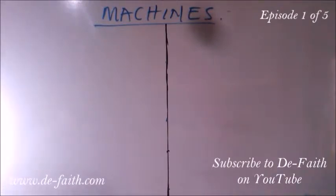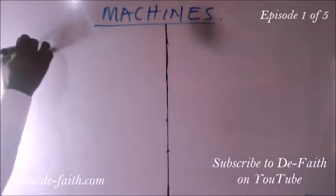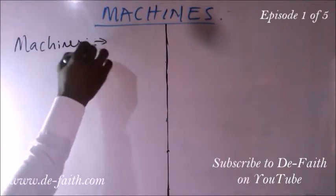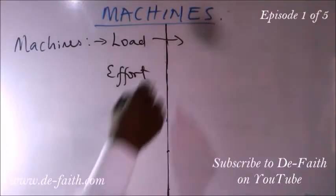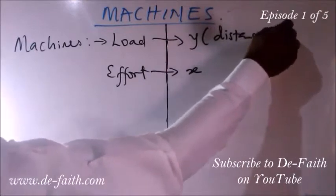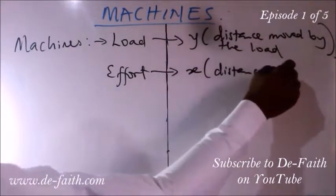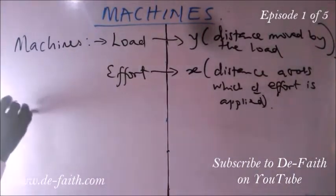When we talk about machines, we apply efforts, and that effort is needed to move a body through a distance. We also talk about a load which is being moved through a distance. So machines involve both load and effort. The load needs to move through a certain distance — we can represent that with x — and this is the distance across which the effort is applied.